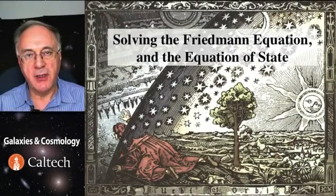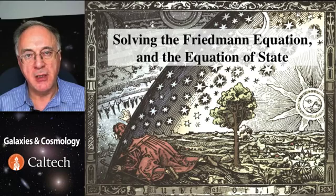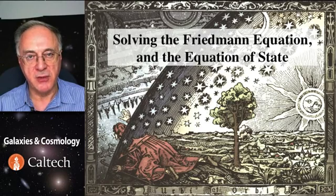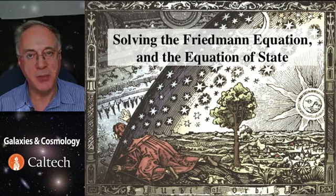Hello again. So far we introduced the Friedmann equation, which is the basic equation of relativistic cosmology. Its solutions describe how the universe is expanding as a function of time and therefore how the distance between any two different objects can be computed.